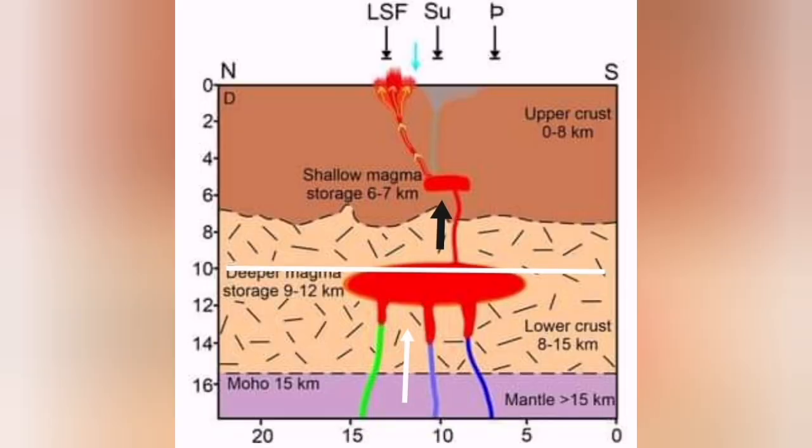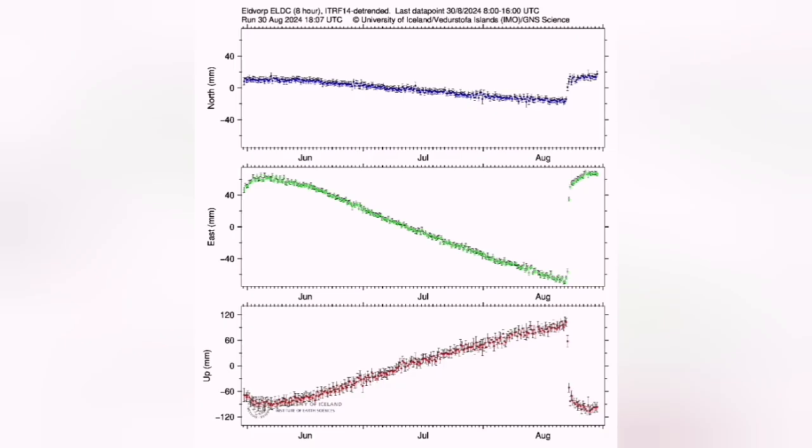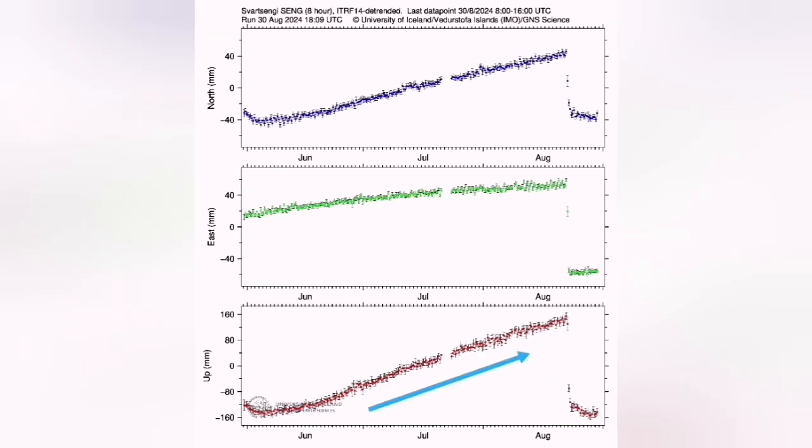We are seeing in three stations, Eldvarp, Svartsengi, and Skipstak, evidence from the GPS data showing that the land rise due to magma arriving and accumulating in Svartsengi, a medium depth reservoir, is increasing.